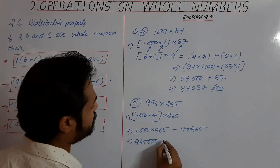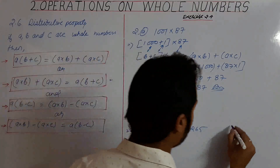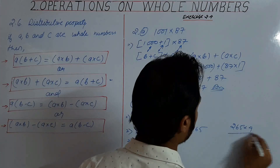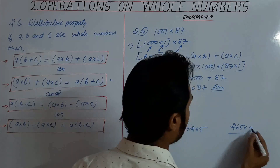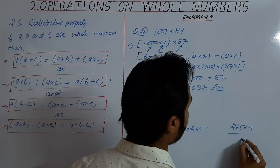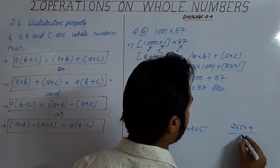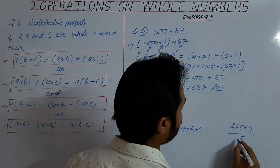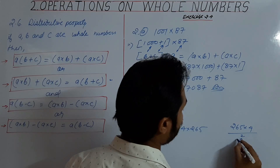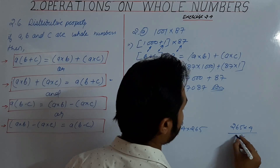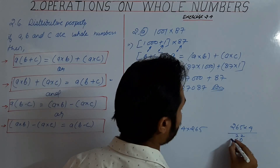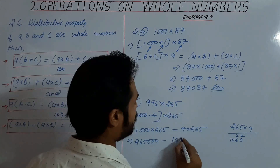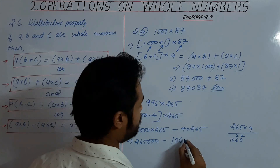Directly we can multiply 1000 by 265 minus 4 by 265. This gives 265,000 minus 265 into 4. Computing 265 into 4: 4 into 5 is 20, 4 into 6 is 24 plus carry 2 is 26, and the result is 1060.